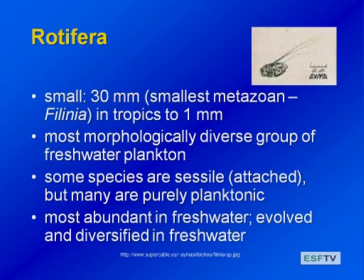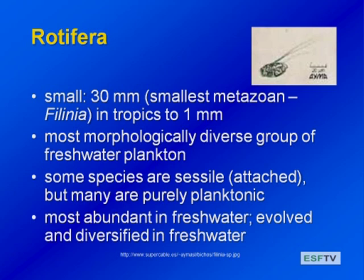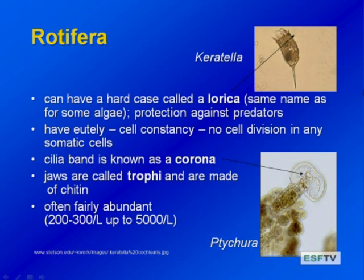What are some general characteristics of the rotifers? The smallest known metazoan or multicellular animal is one of the rotifers, Seison, at only 33 microns. They can also get to a giant size for rotifers of one millimeter, like Asplanchna — but that's still really small. They're morphologically very diverse in shapes and sizes. Some species are attached, but many are purely planktonic. They're most abundant in freshwater — they evolved and diversified there. Some have long spines for predation defense, and they can have a hard lorica case. They also have a unique trait called eutely, or cell constancy.